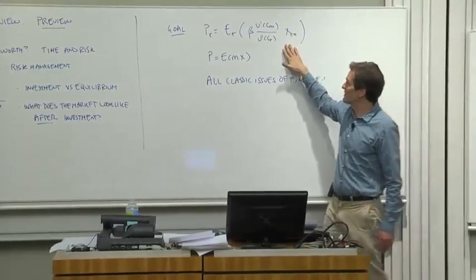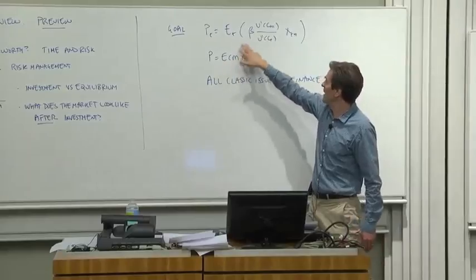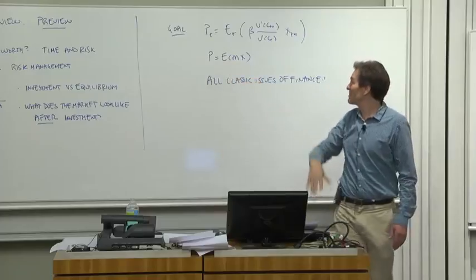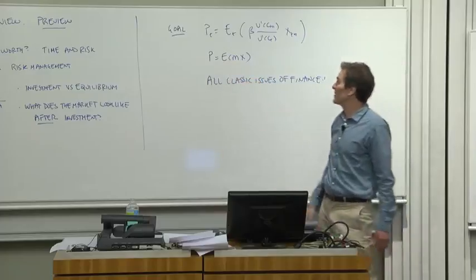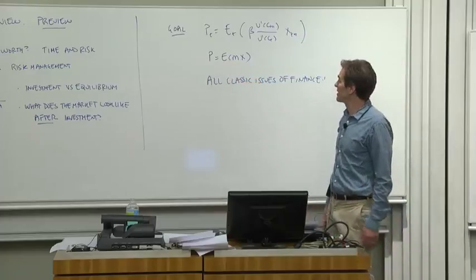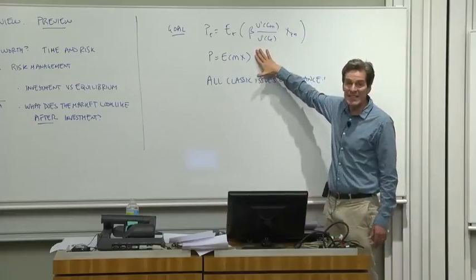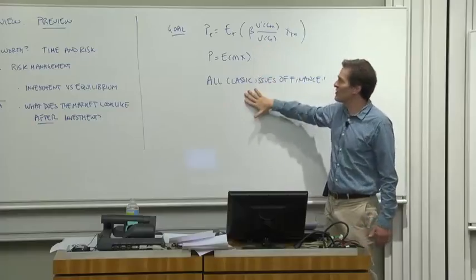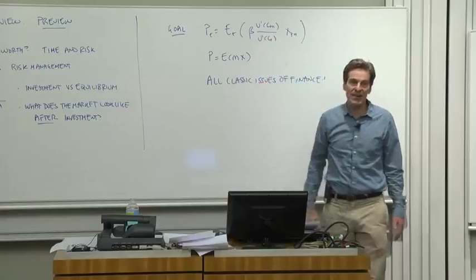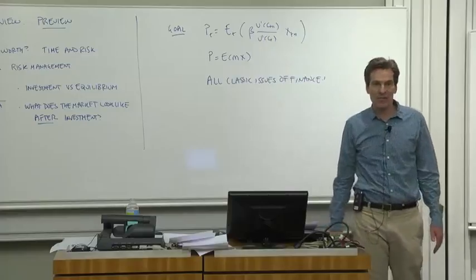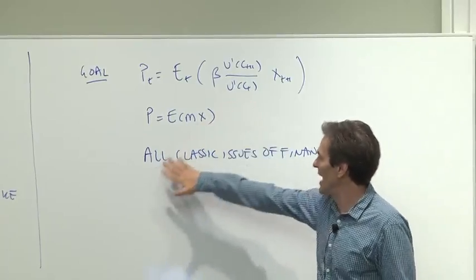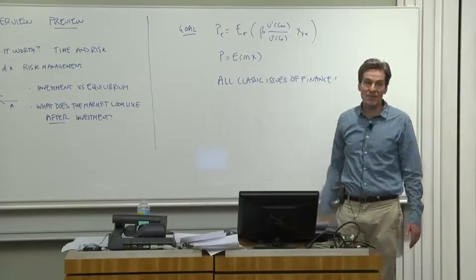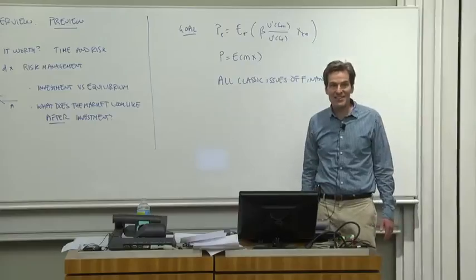I often write this in simplified form, mp equals e of mx, where m stands for all that stuff. And once you've done this 20 times, you'll know where to put the t's and the t plus ones. So that won't be a big stumbling block. So our goal is first, understand this basic asset pricing formula. And then over six weeks, everything in finance, all the theory of finance derives from that basic formula. So today, we'll understand the basic formula and then see an overview of how all the classic issues of finance drop out of that basic formula. I hope you're excited to see how it works.